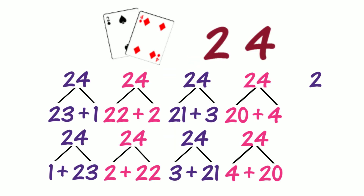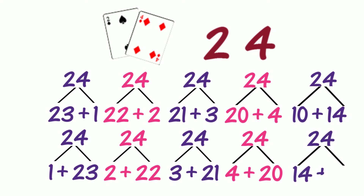Let's partition 24 into 10 and 14. Let's record our partition. If the parts swap places, what other partition do we know? Do we know 14 and 10? Does this partition use place value? Have we partitioned into tens and ones? We have partitioned into tens and ones — one 10 and 14 ones.